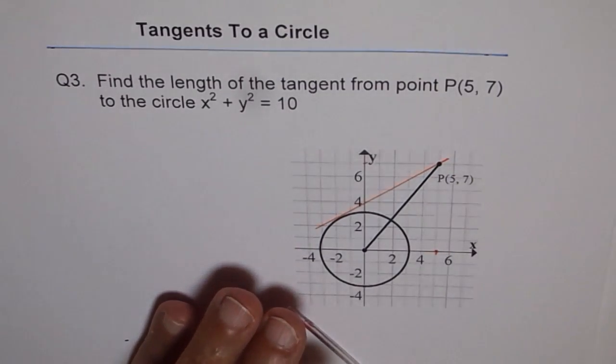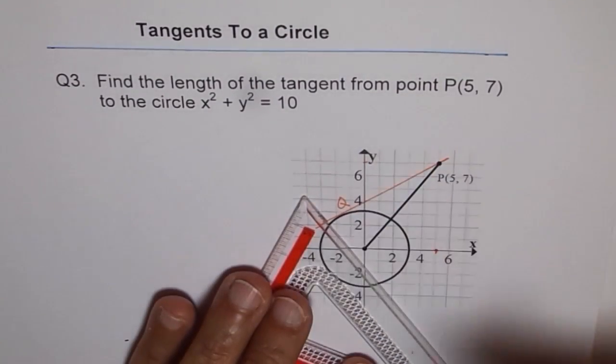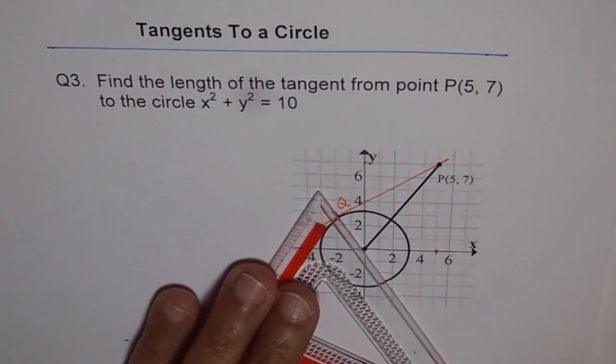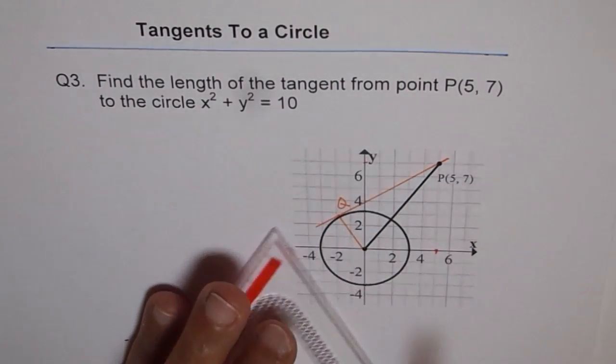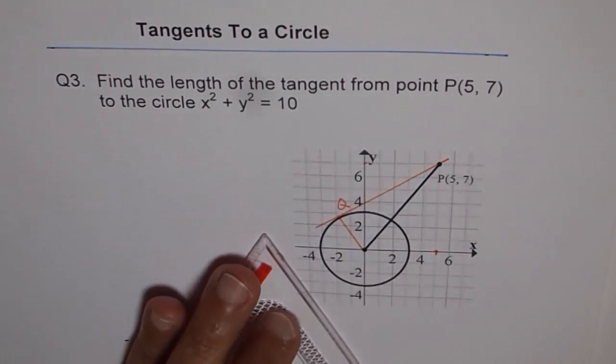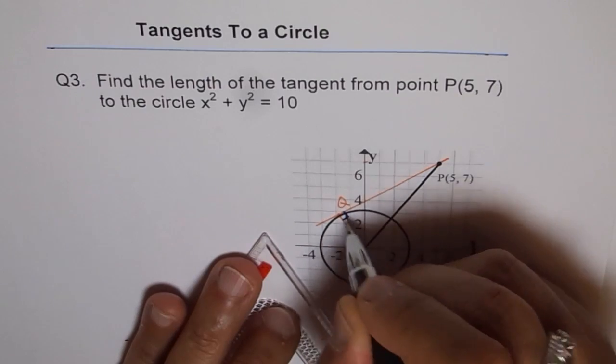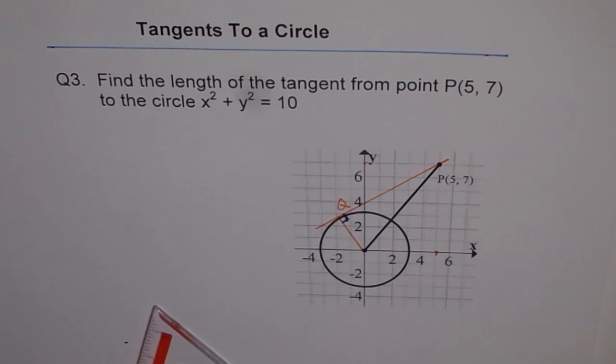So we'll draw this line. Now this line touches our circle at a point and let's call this point Q. Now, if I join this point Q with the center, then I should get a right angle here. So I have a right angle here and that is the definition of tangent. Tangent is a line which makes the right angle over the radius at the point where it touches the circle. And it touches just at one point on the circle.